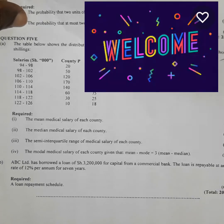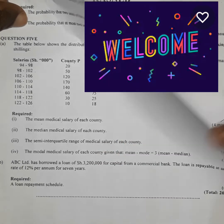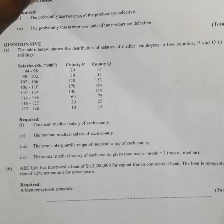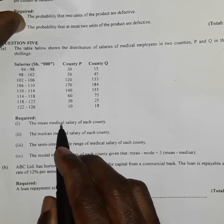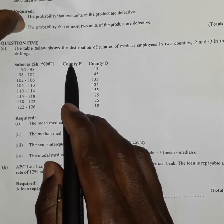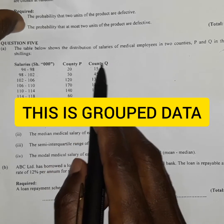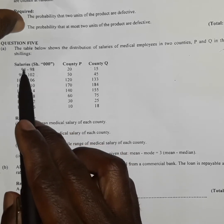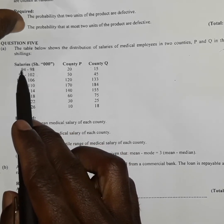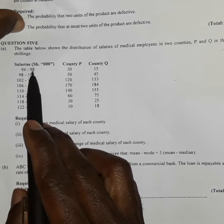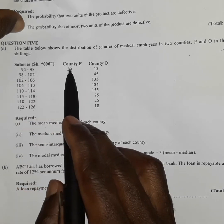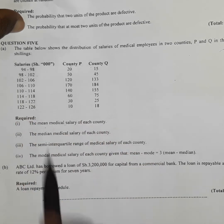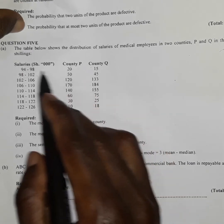Welcome to another session. Here we have an assignment from a CAST past paper where you are supposed to determine the mean medical salary of each county. We have two counties, P and Q, and we've been given the grouped data for the salaries — for example, the group 94 to 98 has a frequency of 20 employees earning in that range.